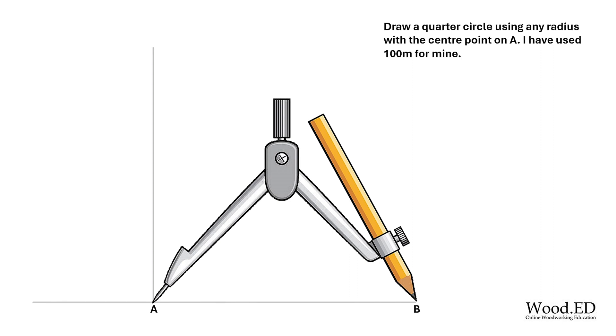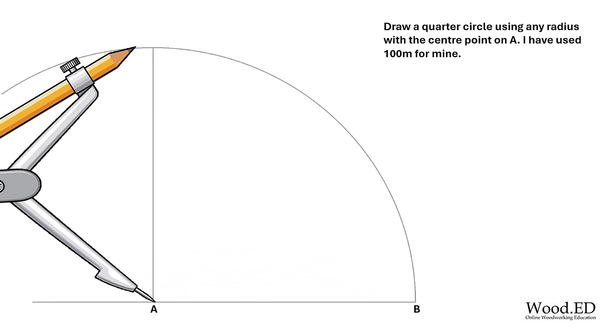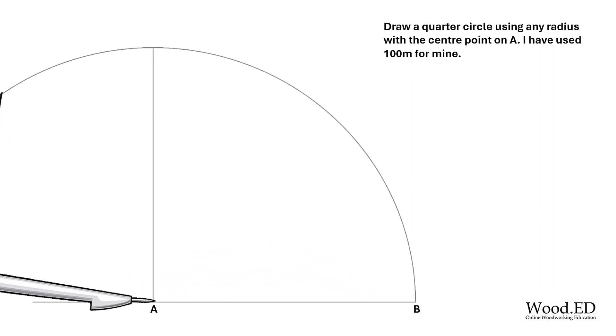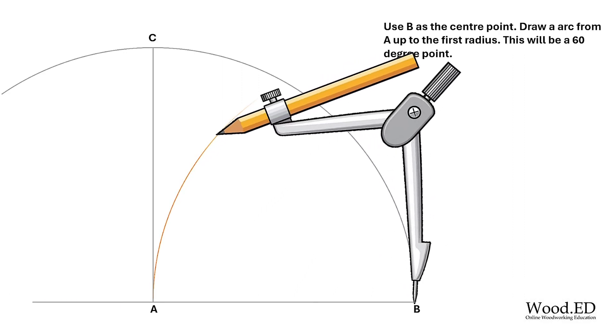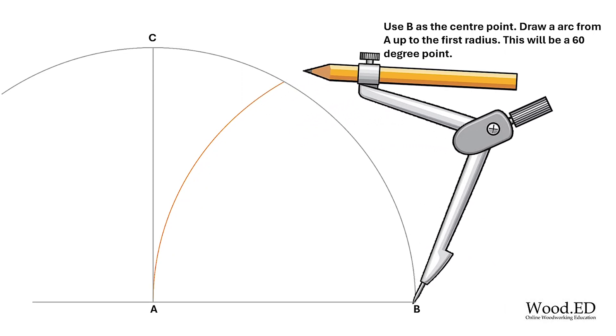We're then going to set a compass to whatever distance you fancy. I've used 100mm on mine and we're going to go from point A where the vertical line meets the horizontal line and arc a line just past a quarter of a circle. We're then going to put the compass point on B and arc a line up till it meets that first radius and that's going to be our 60 degree point.